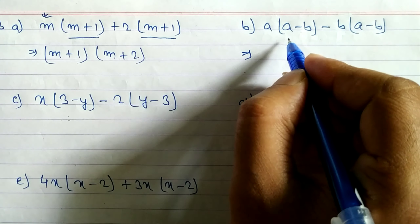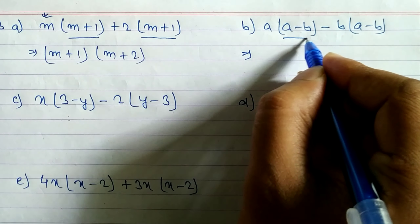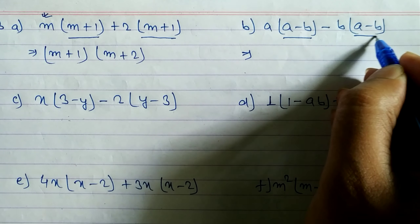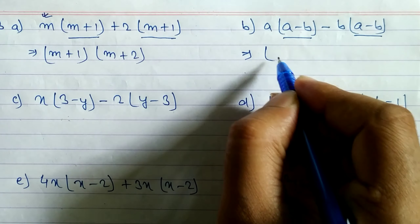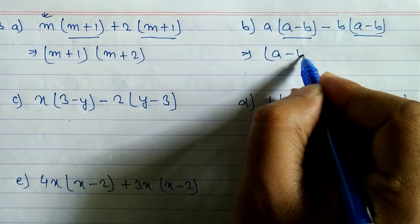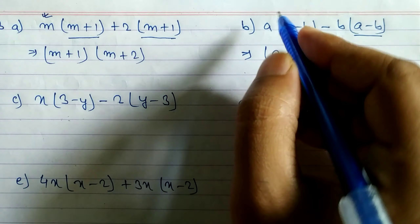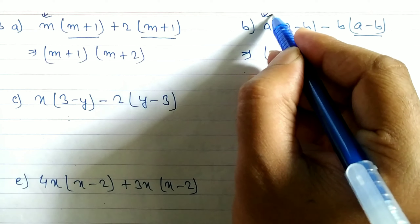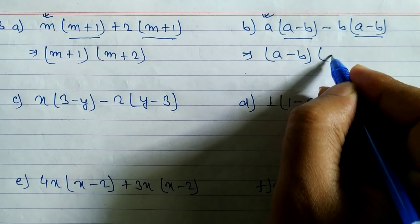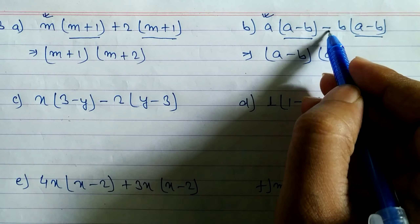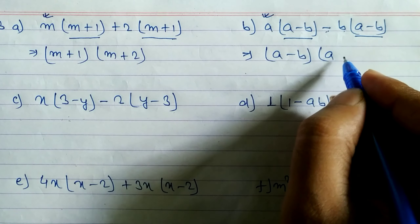Now look at question b. You can see here a minus b, a minus b, so we can take a minus b as common. What is remaining here is a, so we have to write a, and here is minus b — we have to take it with sign, minus b.